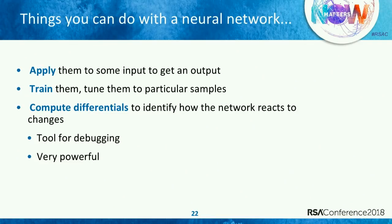What can you do with a neural network? You can query it — put in input, run through the transformations, and get output. To get sensible output, you need to first train it: tune the thresholds and set the ratios so the input-output correspondence is sensible. This is done through a technique called differentials. Differentials tell you: given some change to some aspect of the network, how does it correspond to changes in another aspect? This is really the key reason neural networks can be trained efficiently. It also turns out to be a powerful tool for debugging — but as we know from security, powerful debugging tools tend to be double-edged swords, good for both developing and attacking the system.